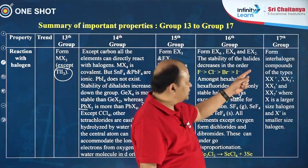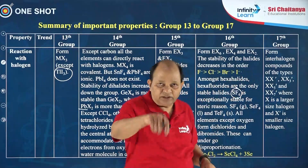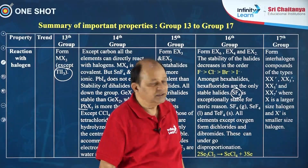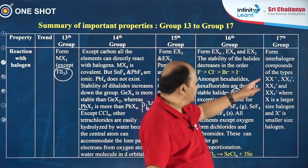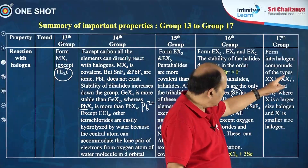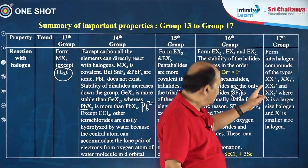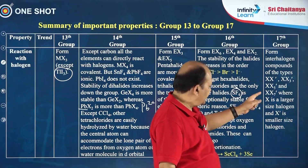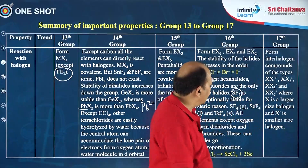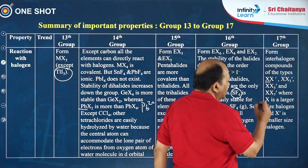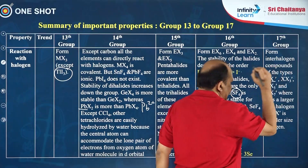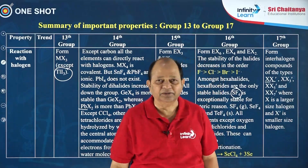Halogens react among themselves to form interhalogen compounds. They are of the types XX', XX'3, XX'5, and XX'7, where X is the larger halogen and X' is the smaller halogen.